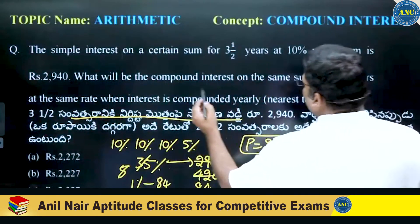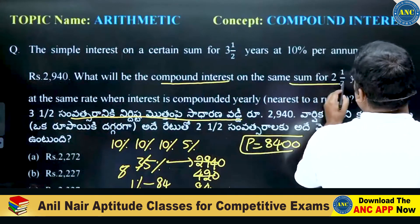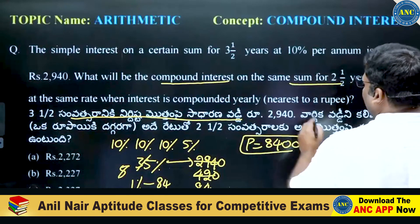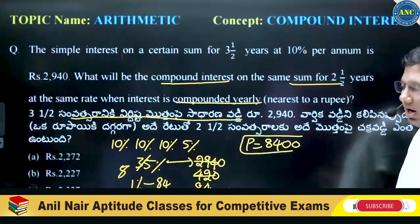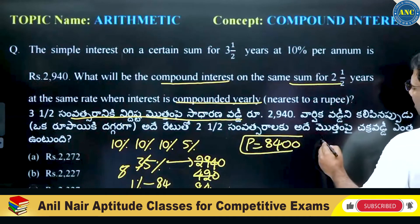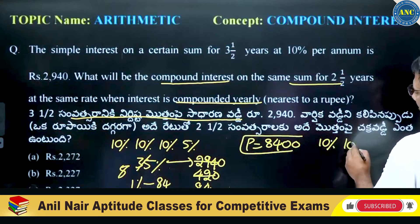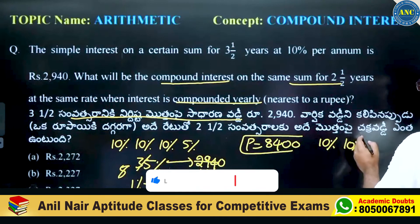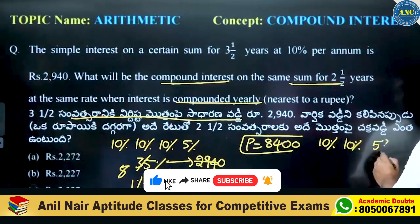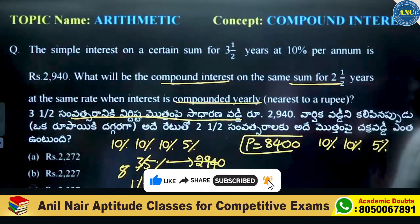What will be the compound interest on the same sum for two and a half years when it is compounded yearly? 1st year MO 10%, 2nd year MO 10%, 3rd year MO 10%. Right, yearly. Half — half of 10 is 5%. So: 10 percentage, 10 percentage, 5 percentage.